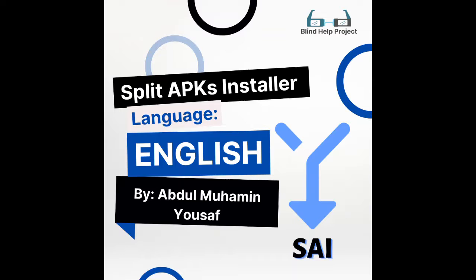We have opened the application. All we have to do is press the Install APKs button and select your APKS files. You can select more than two files at once and this application will install them for you. For the file picker, I will click the internal file picker button. There are three options: internal file picker, system file picker, and cancel.